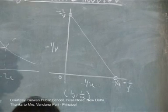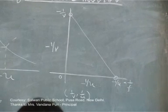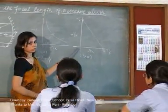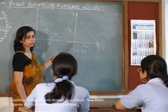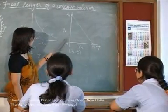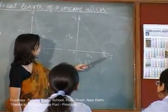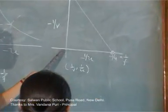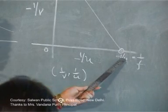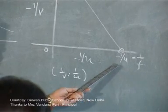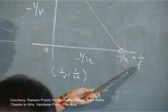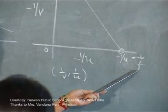A student explains: at that particular point, the value of one variable is non-zero whereas the other comes to be zero. So when we put it in the formula, we directly get the value of 1/F. The teacher confirms: on this axis I have 1/U but 1/V comes out to be zero, so substituting in the mirror formula gives 1/U equal to 1/F. The negative sign only indicates the sign convention, so the focal length will come out negative.